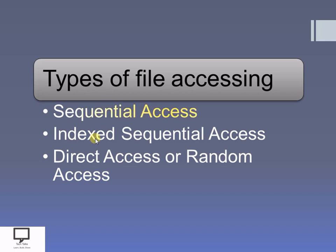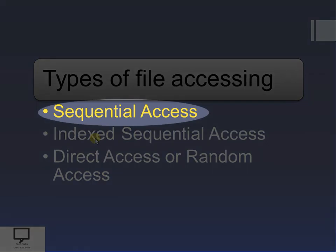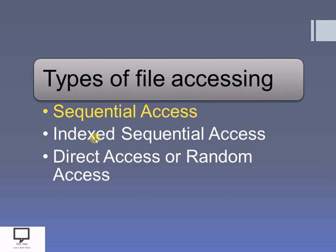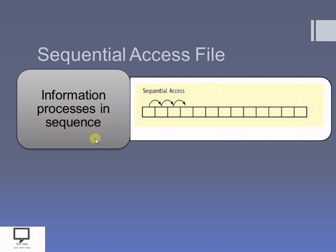I am going to explain all these things one by one in separate videos. So in this current video, I am going to explain only the sequential access file. Now as I explained previously, the information or the records which are present in your file are going to be processed in the sequence. How they are going to be processed, I am going to explain with this figure.